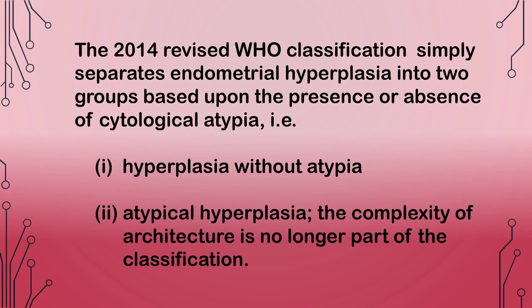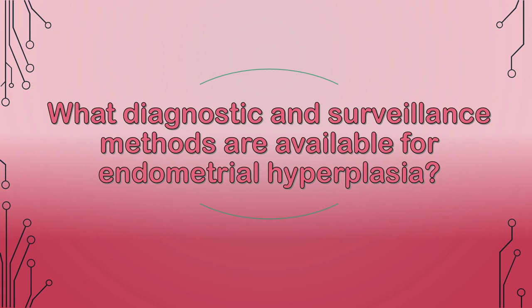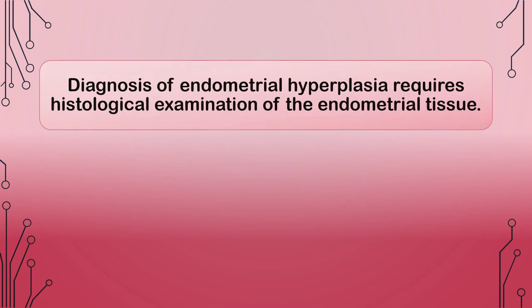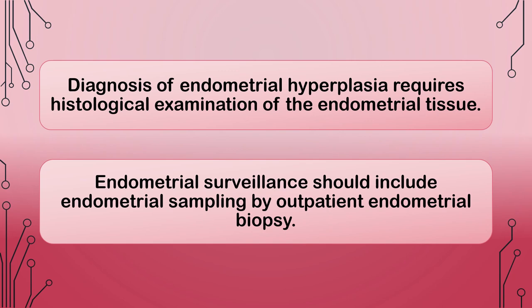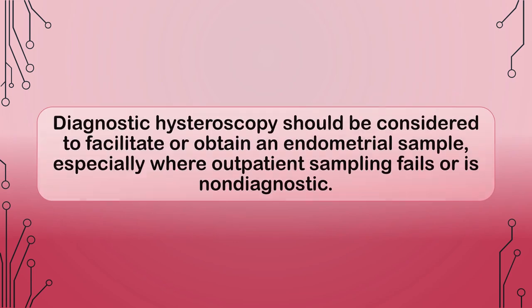The complexity of architecture is no longer part of the classification. What diagnostic and surveillance methods are available for endometrial hyperplasia? Diagnosis requires histological examination of the endometrial tissue. Endometrial surveillance should include endometrial sampling by outpatient endometrial biopsy. Diagnostic hysteroscopy should be considered to facilitate or obtain an endometrial sample, especially where outpatient sampling fails or is non-diagnostic.